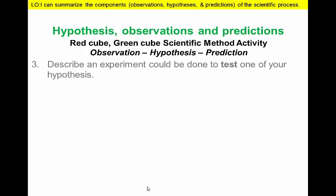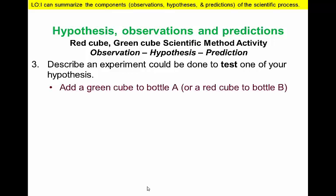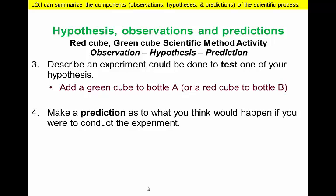What experiment could you do to test which of these hypotheses was correct? What prediction would you make about what might happen during the experiment? One simple experiment would be to take a green cube and drop it into bottle A to see what would happen. If the cube was more dense than the red cube, you would predict they would sink again. But if there was no difference in the density of the cubes and the difference is in the liquids, the green cube would float.